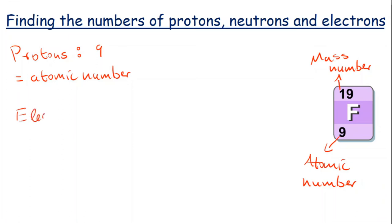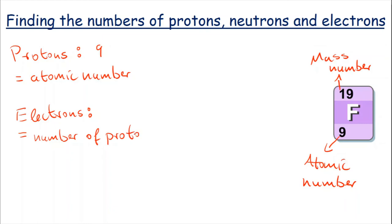For the electrons, we need to remember that in a neutral atom, like fluorine is, we have the same number of protons and electrons. We already know the number of protons is 9, so that means we also have 9 electrons.